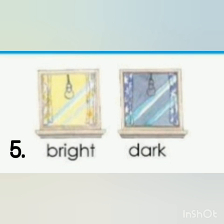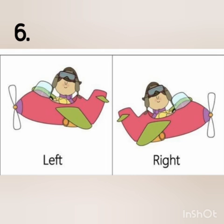Number five is bright and the opposite of bright is dark. You can see in the picture there are two windows — in one window you can see light, so it is bright, but in the other there is no light, the bulb is off, so it is dark. Like the day is bright because of sunlight, and in the night it is dark. The opposite of bright is dark and the opposite of dark is bright.